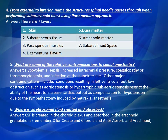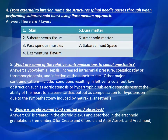Question Number 5: What are some of the relative contraindications to spinal anesthetic? Answer: Hypovolemia, sepsis, increased intracranial pressure, coagulopathy or thrombocytopenia, and infection at the puncture site. Other major contraindications include conditions resulting in left ventricular outflow obstruction such as aortic stenosis or hypertrophic cardiomyopathy, which restrict the ability of the heart to increase cardiac output as compensation for hypotension induced by neuraxial anesthesia.